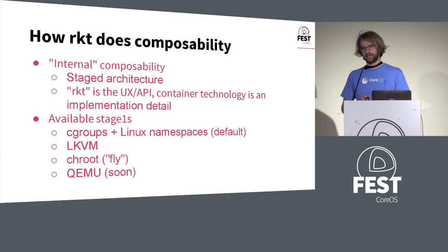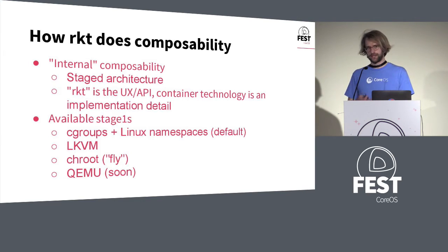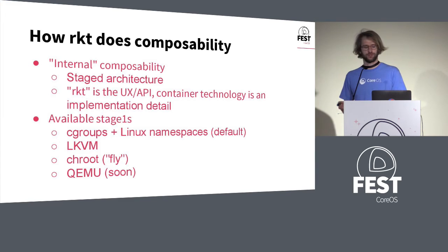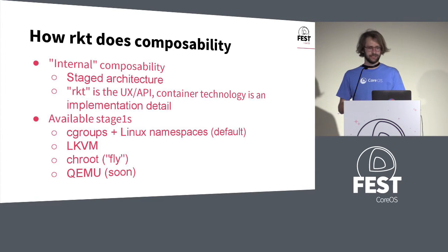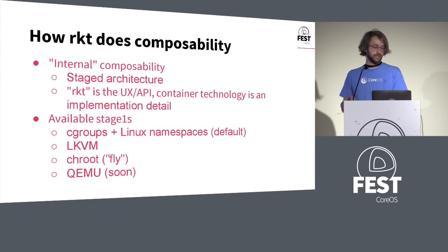The second major stage one uses LKVM, a user space tool that can fire up virtual machines very quickly on Linux. That fires up an entire VM using KVM technology to contain the pod. We also have another one we call rkt fly, which does a simple chroot to execute your application. The idea there is that sometimes you might just want to use Rocket as almost a package manager — to get all the benefits of container image management: discovering them over the internet, downloading, unpacking, verifying, and checking signatures. That's handy on distributions like CoreOS where you don't have a classic package manager. Finally, we have patches to integrate a QEMU-based stage one, which leverages the QEMU hypervisor to spin up a VM to run that pod.